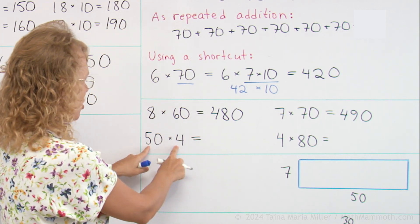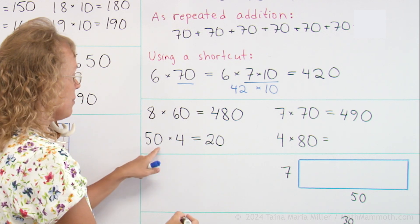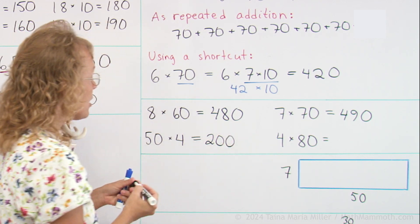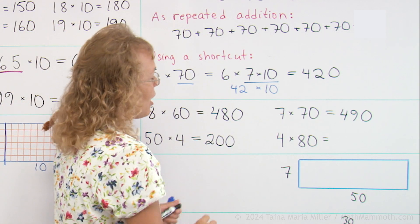50 times 4. Go 5 times 4. That's 20. And then a 0. And it does make sense. 4 times 50. You could even add 50, 50, 50, 50. You get 200.